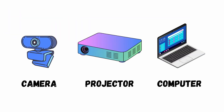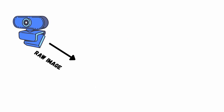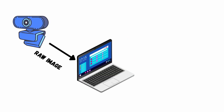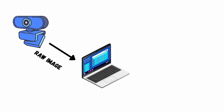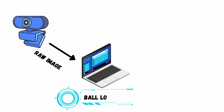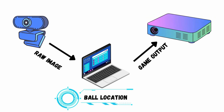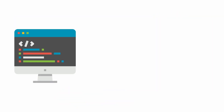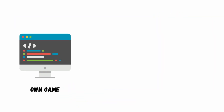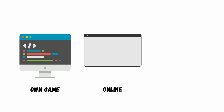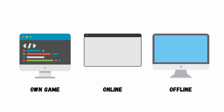The project consists of three main hardware components: a camera or webcam, a projector, and a PC or laptop. The camera grabs images of the playing arena and sends those to the computer. The computer then processes them to find the location of the ball, and once the location is found, it sends an output to the projector to display the game. Here we can create our own game or use an existing game from the internet or even offline.